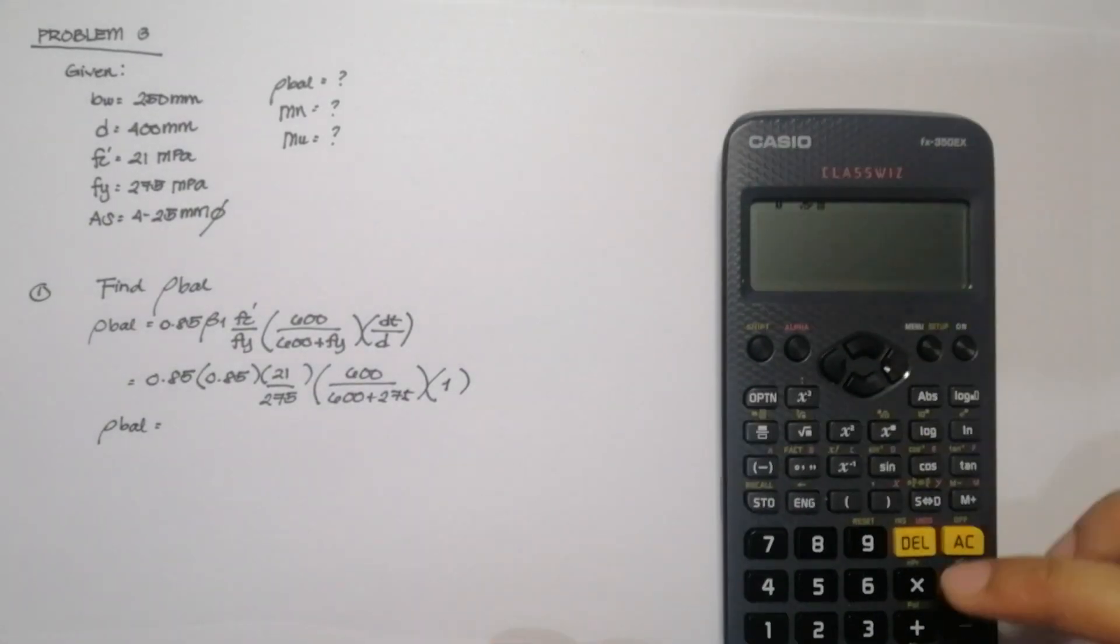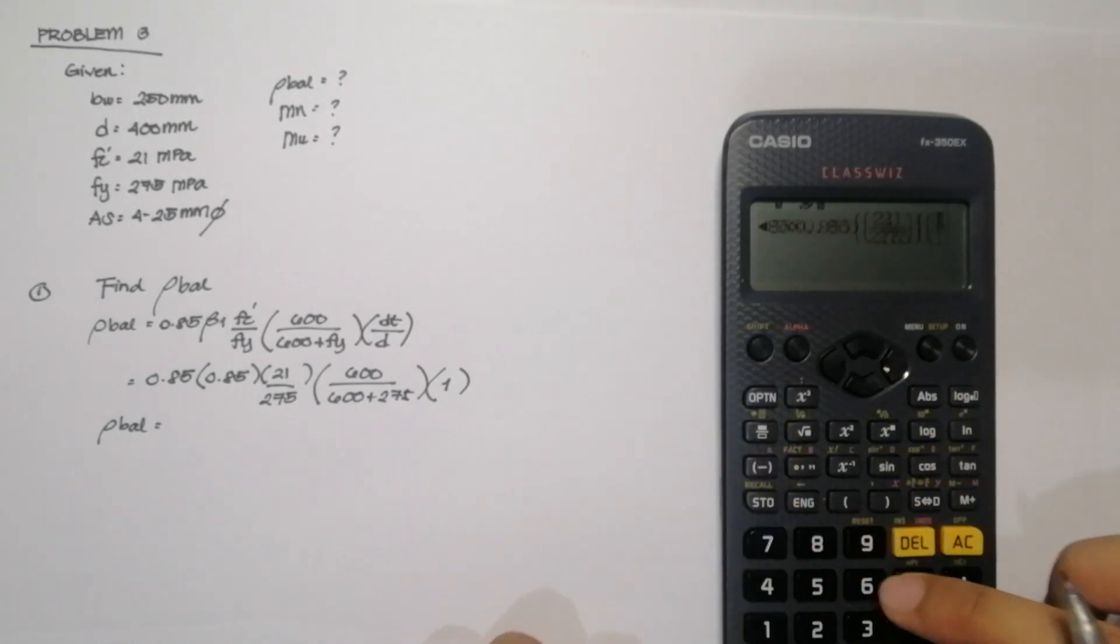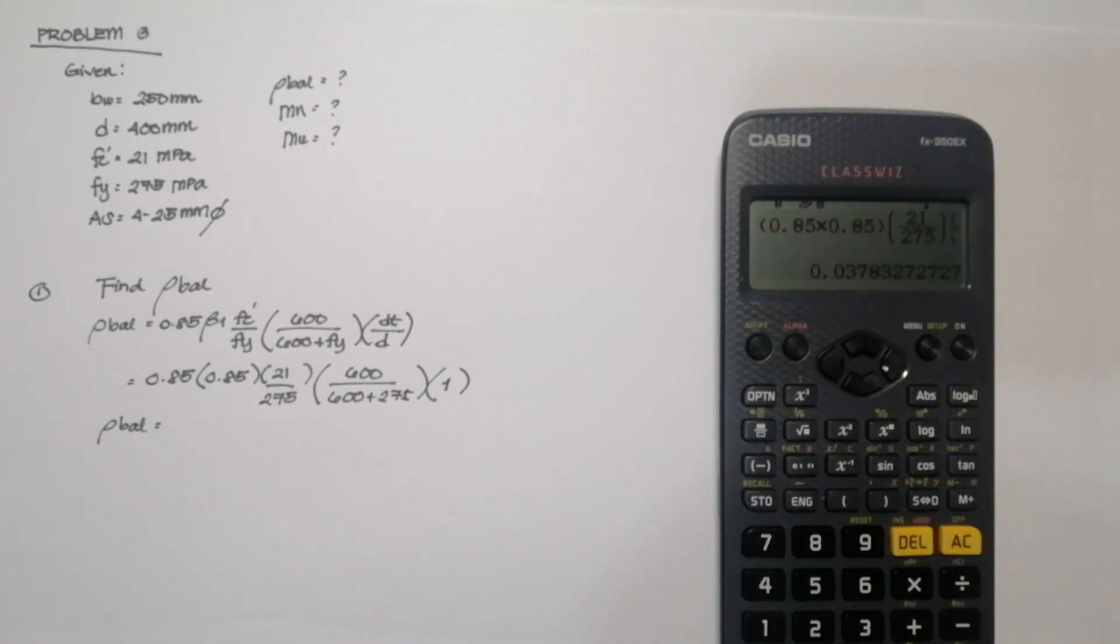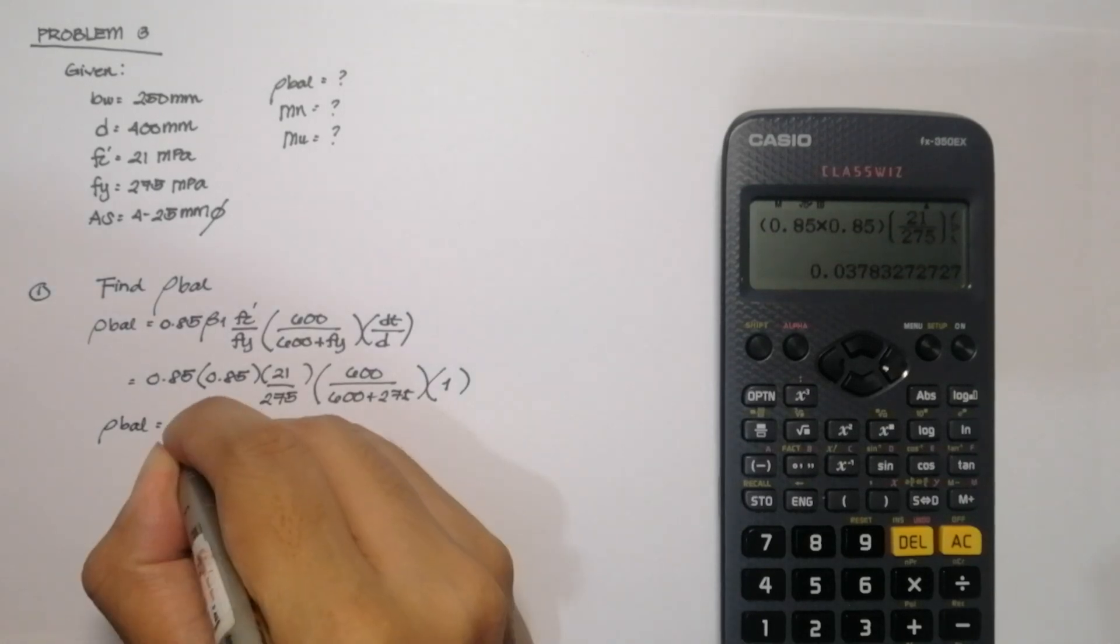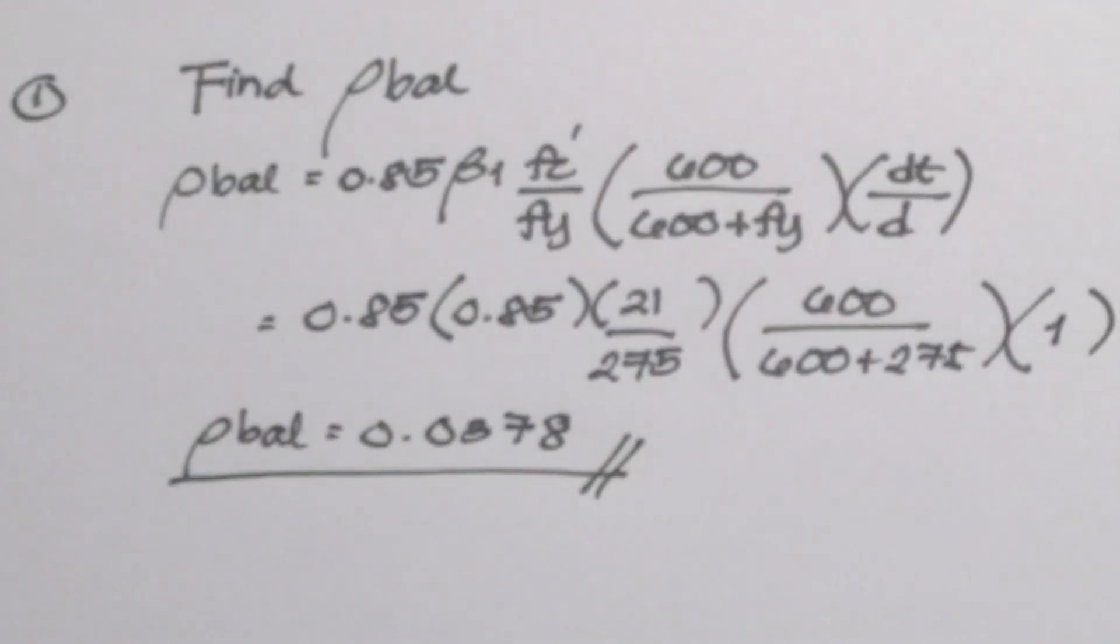So by computing the value of rho balance, we can get a value of 0.03783. And that is the answer for the first question.